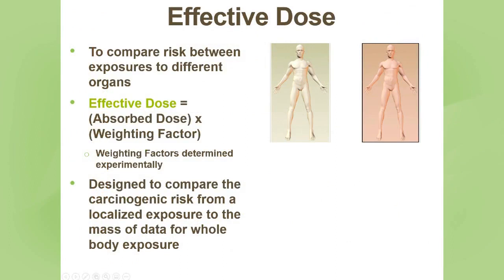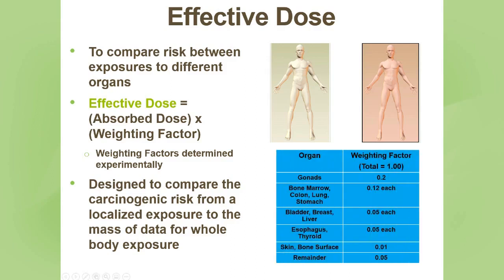The term effective dose was developed by scientists to compare the risk between exposures to different organs. Clearly, if the whole body is exposed to radiation, that's a different risk than if just the lower extremity is exposed. Effective dose is calculated by determining the absorbed dose to each organ and multiplying it by a weighting factor determined by the International Commission on Radiation Protection. It's designed to compare carcinogenic risk from a localized exposure to data primarily from Hiroshima and Nagasaki survivors, who received whole body exposure.